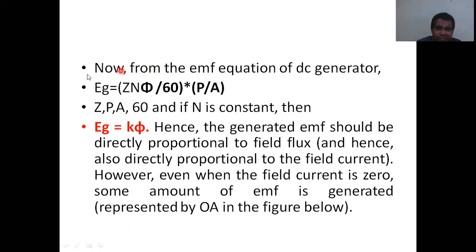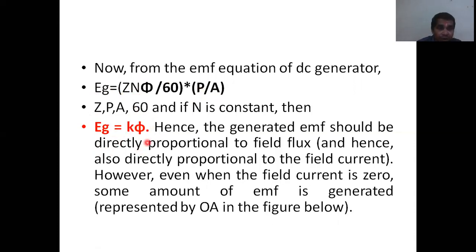From the EMF equation: Eg = ZNφ/60 × P/A, where Z is the number of conductors, N is speed, φ is flux, P is poles, and A is parallel paths. Since Z, 60, P, and A are all constant, Eg is proportional to speed and flux. If speed is kept constant, the generated voltage is directly proportional to the magnetic flux. However, flux cannot be increased beyond saturation — after a certain value the flux remains constant, giving a constant voltage.